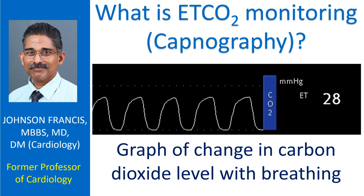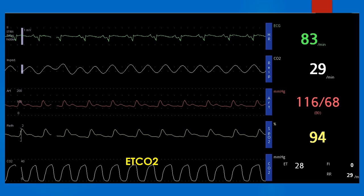Discussion on ETCO2 monitoring in ICU. Carbon dioxide monitoring is also known as capnography. End-tidal carbon dioxide is the partial pressure of carbon dioxide in exhaled air at the end of expiration. Normal values are in the range of 35 to 45 mmHg. The graphical representation of CO2 is known as a capnogram.